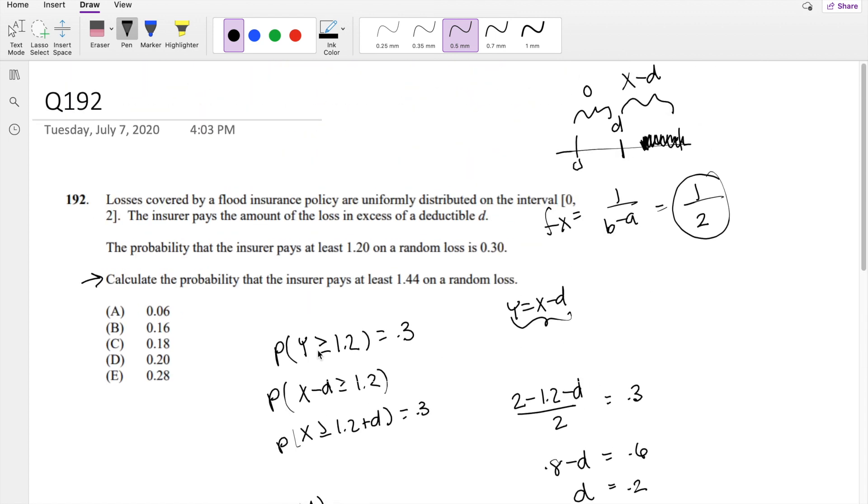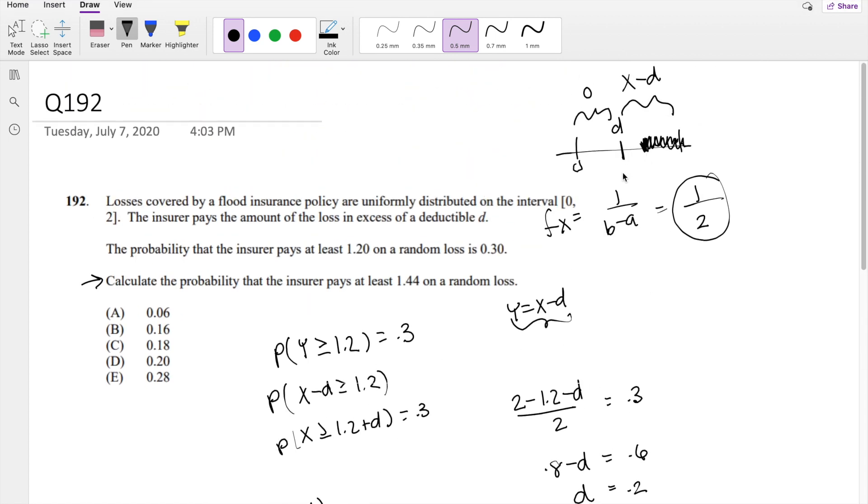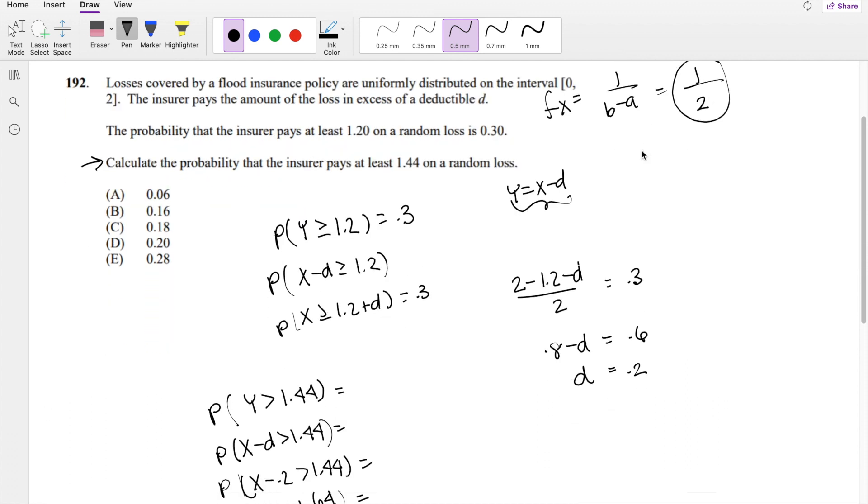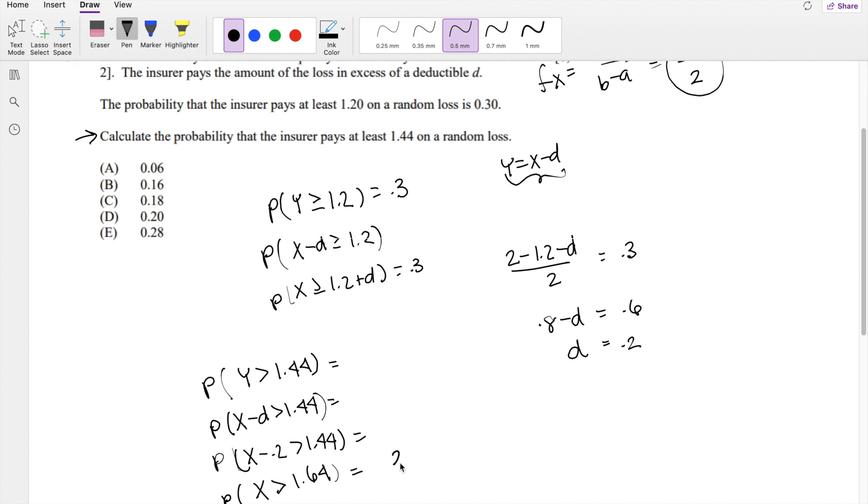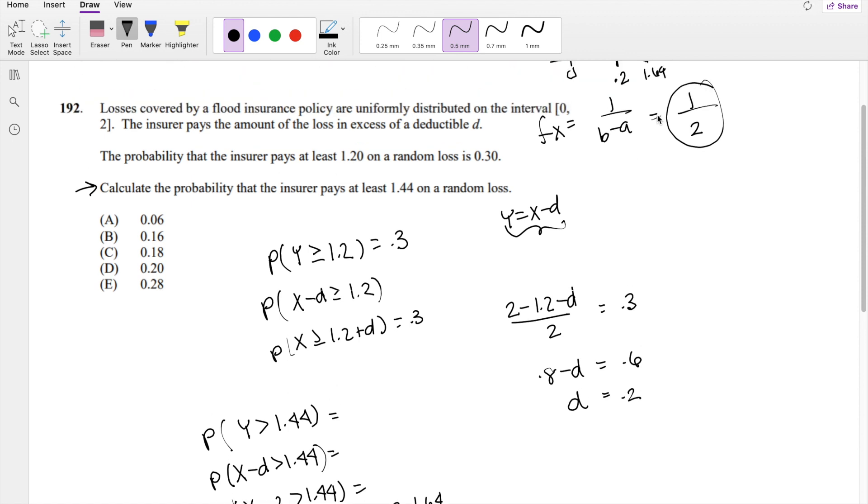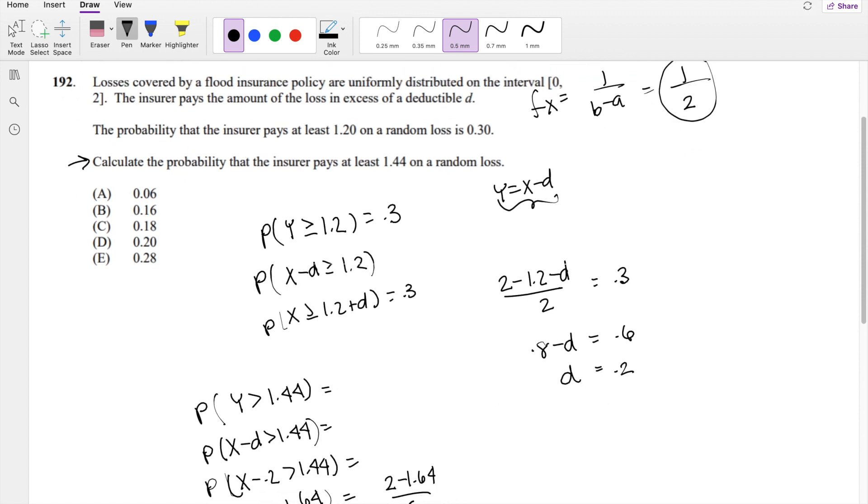But anyways, what is the probability x is greater than 1.64? Same thing, if we're trying to look for, like, if this is 1.2 here, and we're looking for 1.64, what is the probability it's greater than that number? We just have to top it off with the top limit, which is 2, minus 1.64, divided by our probability function, which is 1 half. So this is equal to 0.18, which is our answer, C.